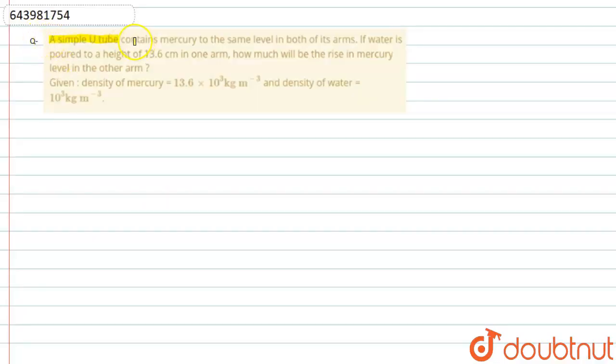U-tube contains mercury to the same level in both of its arms. If water is poured to a height of 13.6 centimeter in one arm, how much will be the rise in mercury level in the other arm? Given: density